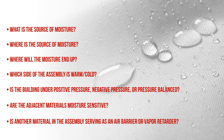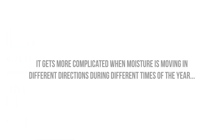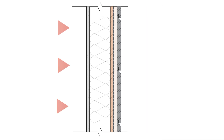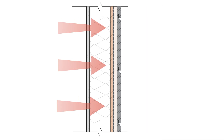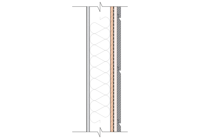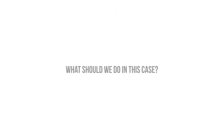For the most part, we want our air barriers to be vapor permeable in order to allow for drying. But it gets complicated when moisture is moving in different directions during different parts of the year — especially with hot, humid summers and cold, snowy winters. There are cases when we need the benefits of a vapor retarder in our air barriers during certain parts of the year, but we may also need that air barrier to be vapor open during other parts of the year when moisture is drying back to the interior.